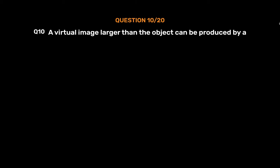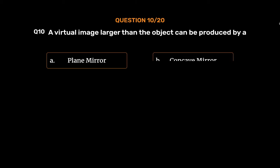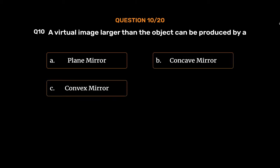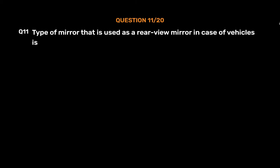Question No. 10: A virtual image larger than the object can be produced by — Option A: Plane Mirror, Option B: Concave Mirror, Option C: Convex Mirror, Option D: All of the above. The correct answer is Option B: Concave Mirror.